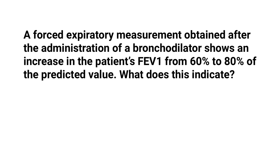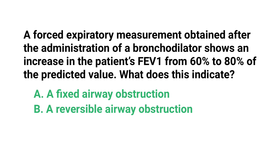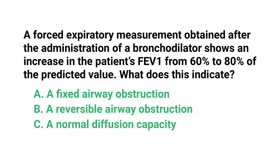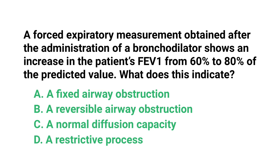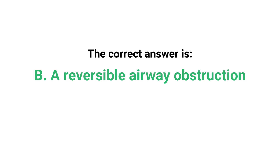A forced expiratory measurement obtained after the administration of a bronchodilator shows an increase in the patient's FEV1 from 60% to 80% of the predicted value. What does this indicate? A) A fixed airway obstruction, B) a reversible airway obstruction, C) a normal diffusion capacity, or D) a restrictive process? The correct answer is B: a reversible airway obstruction.